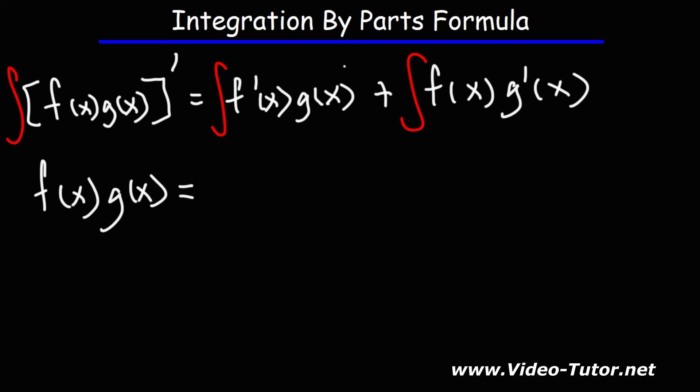On the right, we do need to add dx once we are integrating this expression. So this is going to be the integral of f prime times g of x dx plus the integral of f of x times g prime dx.